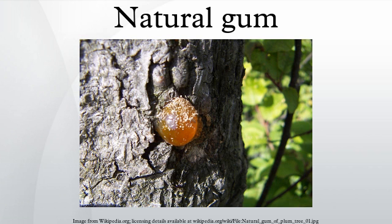Further uncharged gums include: mastic gum, a chewing gum from ancient Greece obtained from the mastic tree; psyllium seed husks, from the Plantago plant; spruce gum, a chewing gum of American Indians obtained from spruce trees; and tara gum, from the seeds of the tara tree.